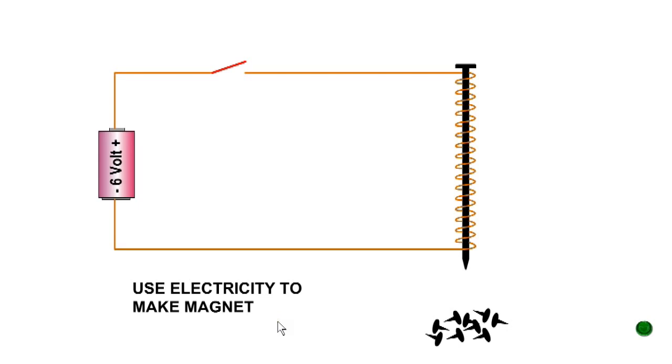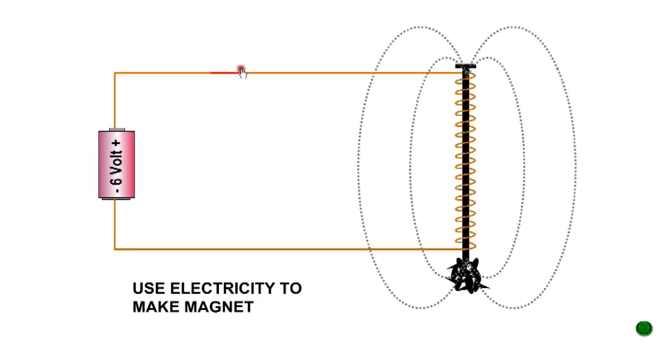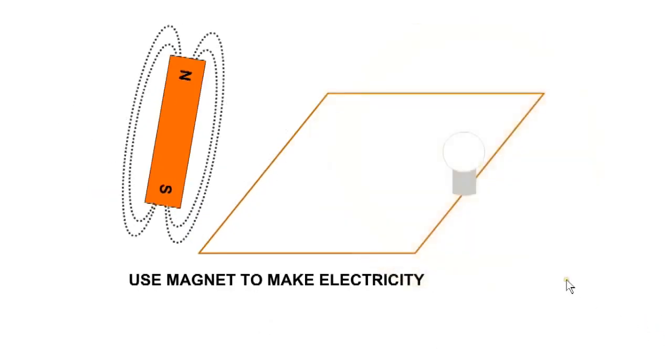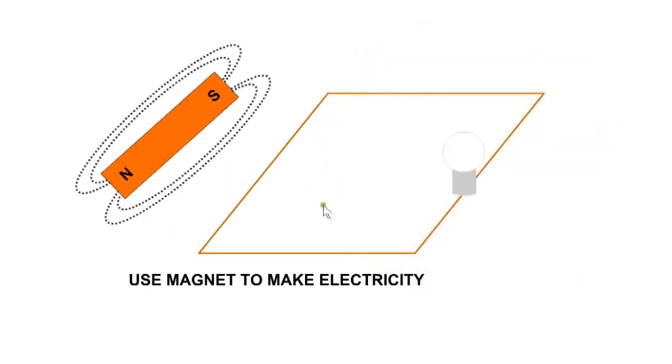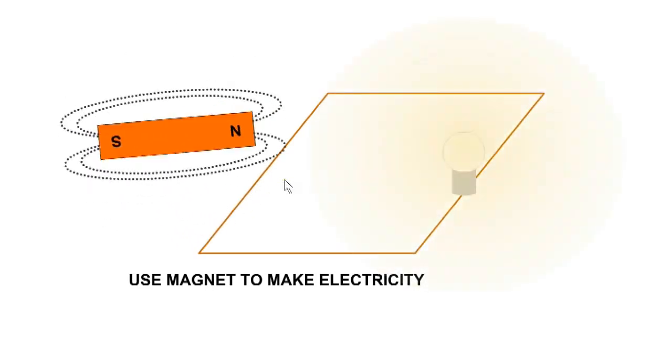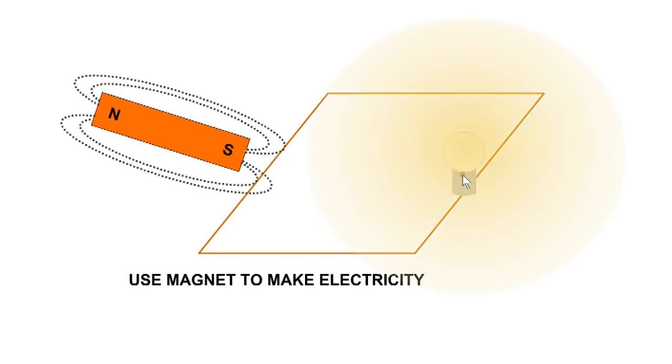There is a close link between electricity and magnetism. Electricity can be used to make a magnet or a magnet can be used to make electricity. When the magnetic field moves past the conductor, electricity is induced.